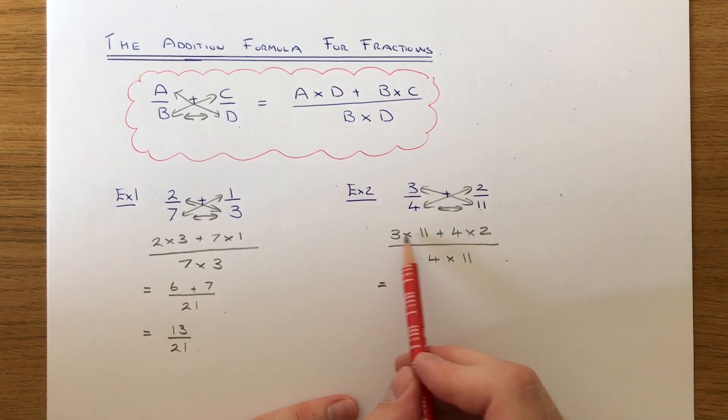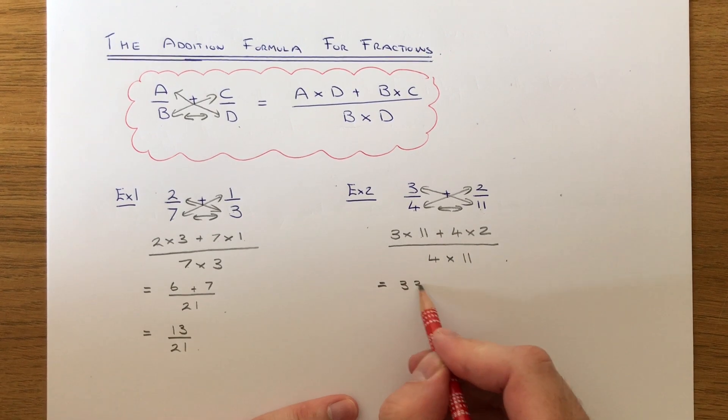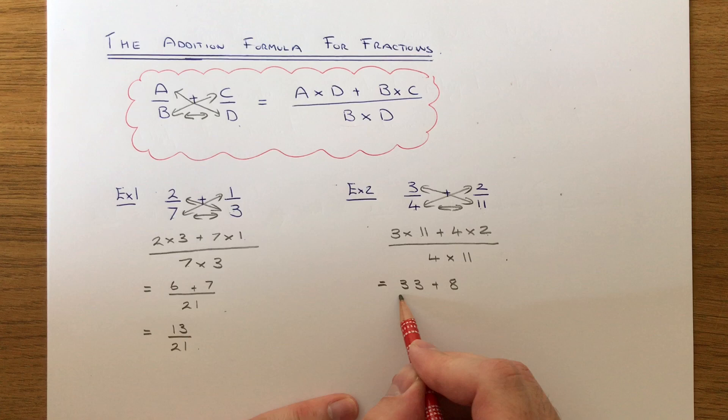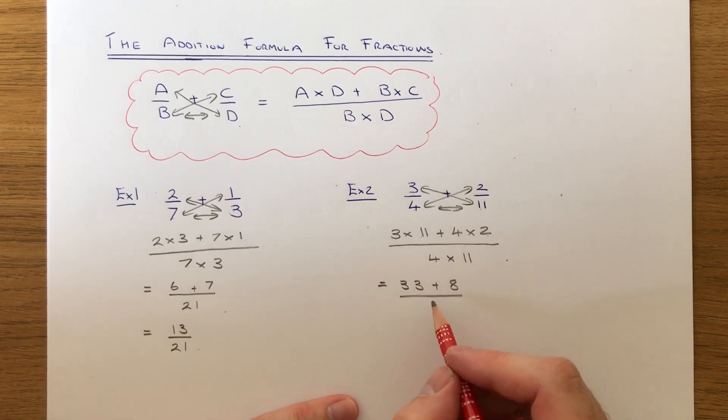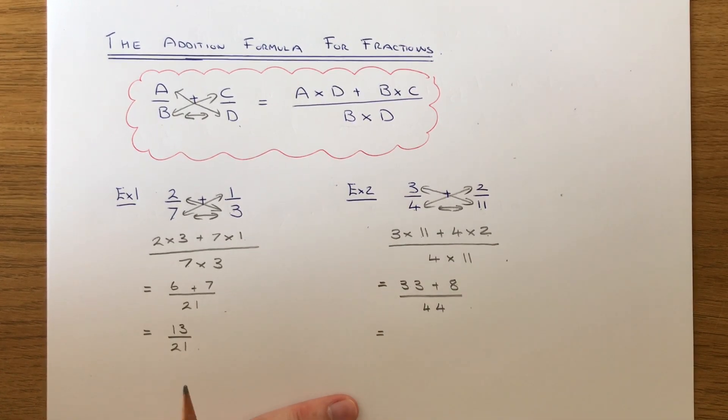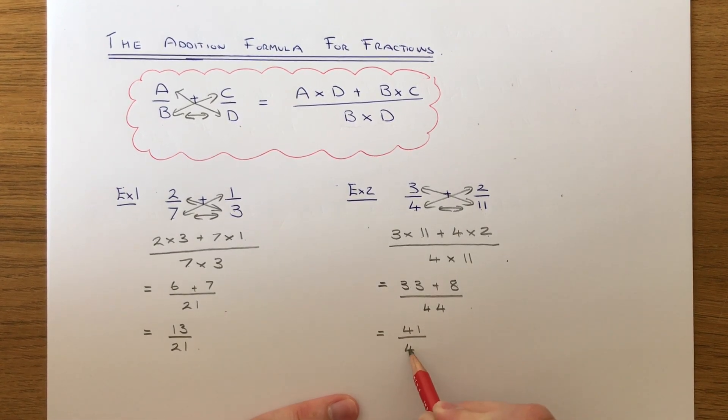If we work this out now, three times eleven is thirty-three plus four times two is eight. On the bottom, four times eleven is forty-four, so we just need to add these two numbers on the top. Thirty-three add eight is forty-one over forty-four.